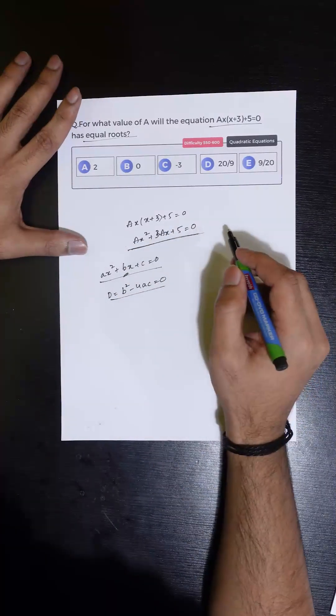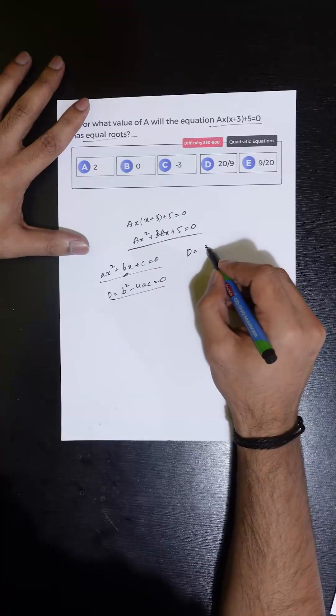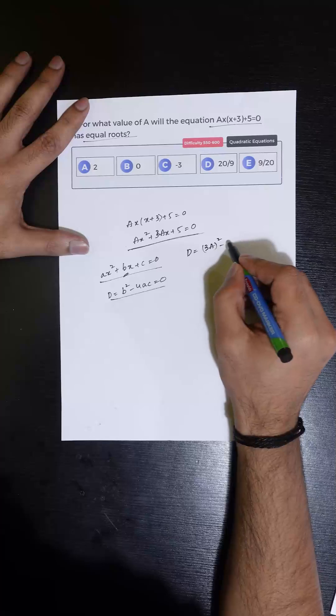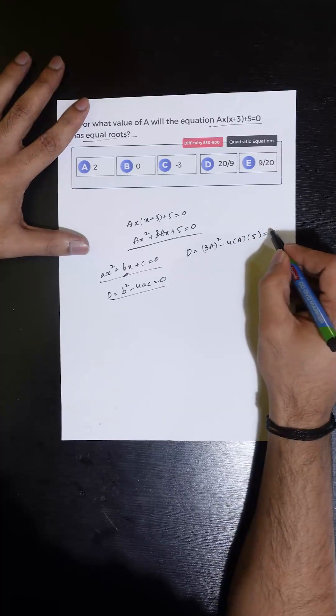So for this equation to have equal roots, the value of D has to be equal to 0, which is B² - 4A into C, which is 5, has to be equal to 0.